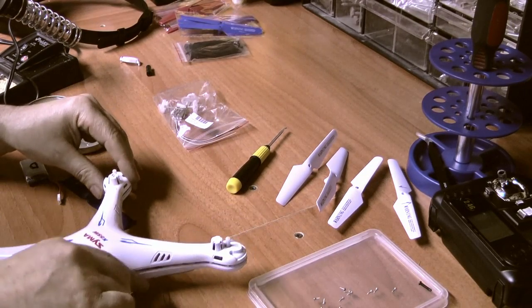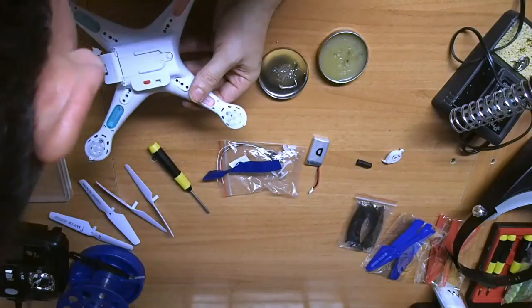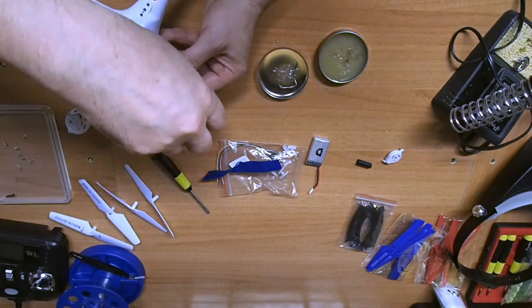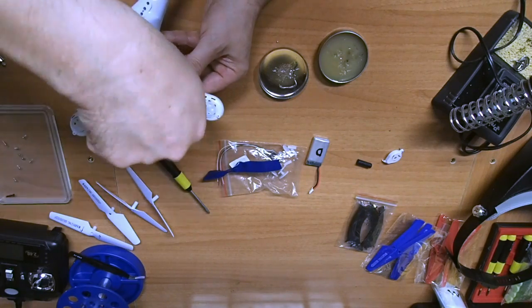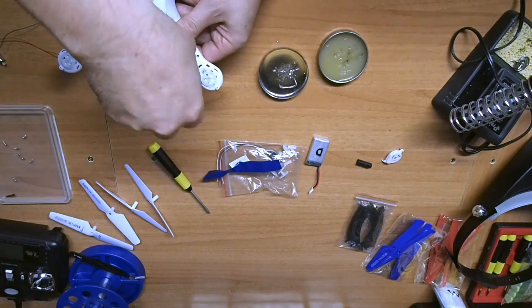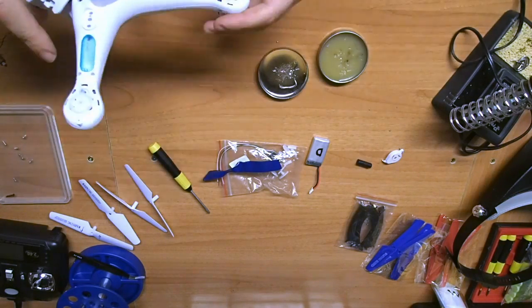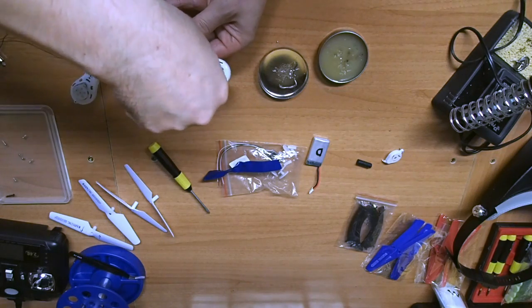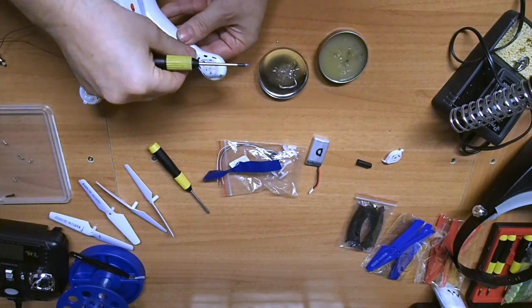Now we assemble everything back together. All the screws are put back in place. If some aren't tightened, that's another problem. You could probably fly this thing with just one screw on each arm because it's very small.